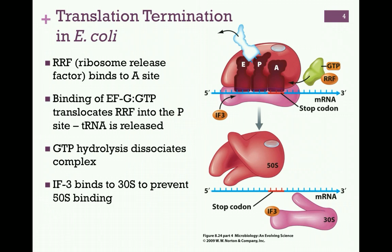To prepare for another round of translation, ribosome release factor, or RRF, slips into the a-site. Binding of EFG in complex with GTP translocates ribosome release factor to the p-site, thereby displacing the deacetylated tRNA.